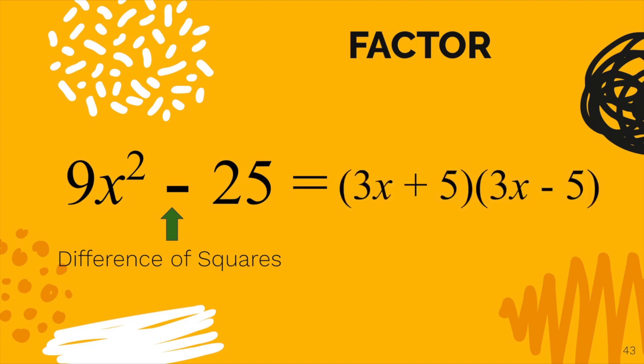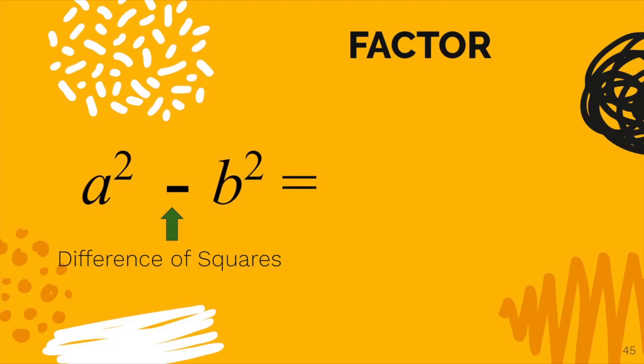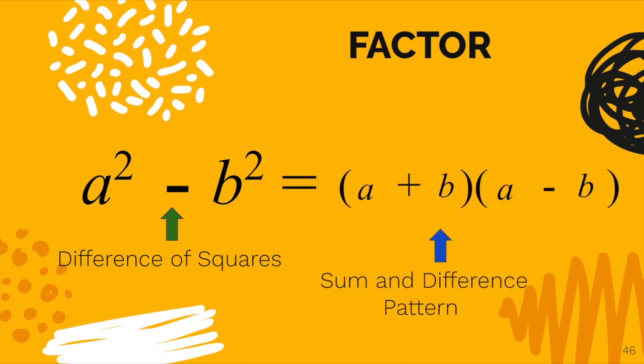And we just saw in the previous slide that that is the same thing as 3x plus 5, 3x minus 5, which is called a sum and difference pattern. And the rule goes like this. Given a squared minus b squared, which is called a difference of two perfect squares, we can factor it into a sum and difference pattern, a plus b and a minus b.